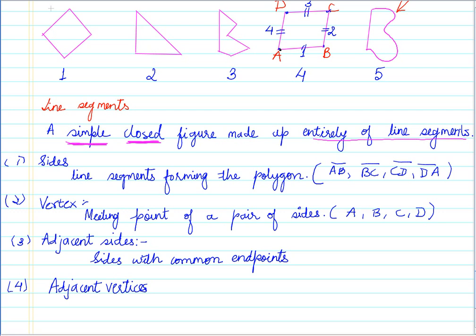Right, so now the endpoints of the same side of a polygon are called adjacent vertices. So in this case, let me just write the definition for you: endpoints of same side.